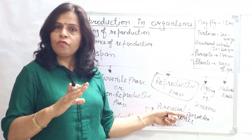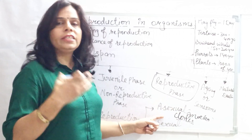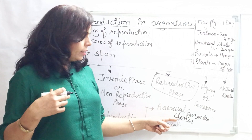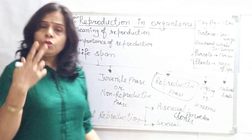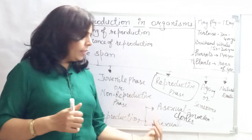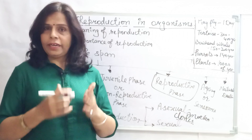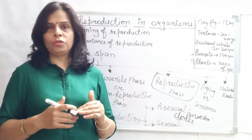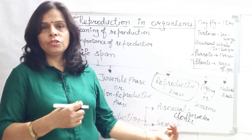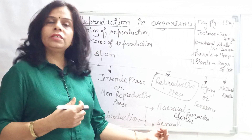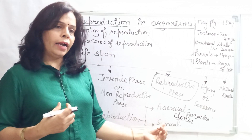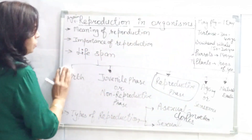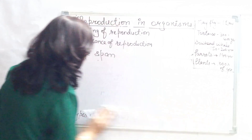Mitosis is an equational division — the number of chromosomes remains equal. The cell simply divides, increasing in number, giving rise to another identical cell. In sexual reproduction, two types of divisions take place: mitosis and meiosis. Mitosis is equational, keeping chromosome number equal. Meiosis involves reduction of chromosomes — it helps in gamete formation. Through fusion of gametes, the chromosome number is restored to diploid. We will cover mitosis and meiosis in detail in further chapters.